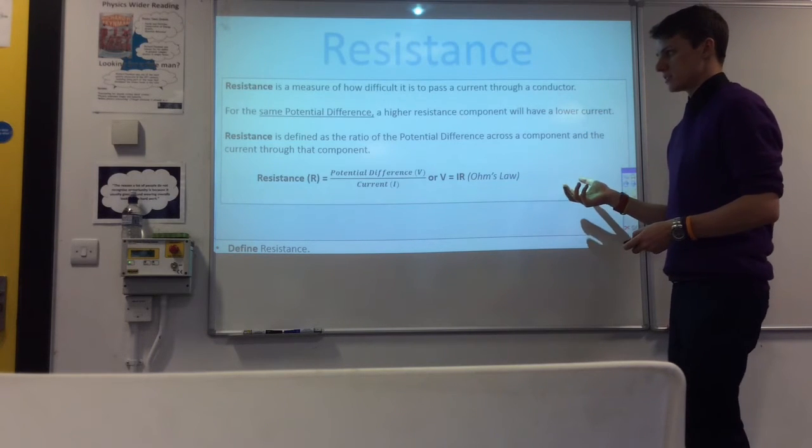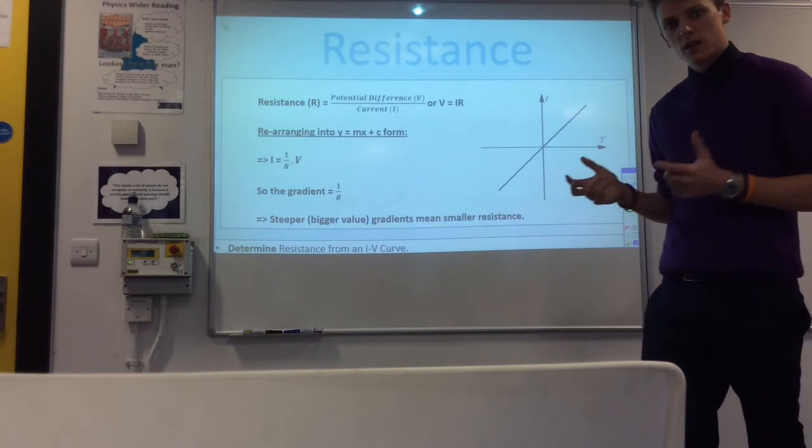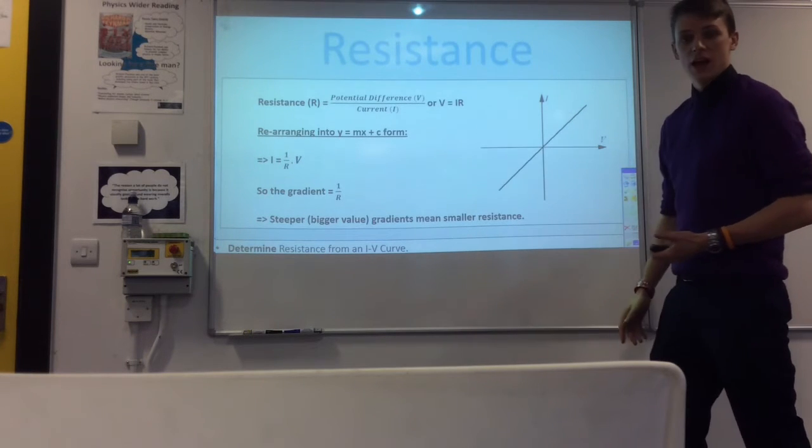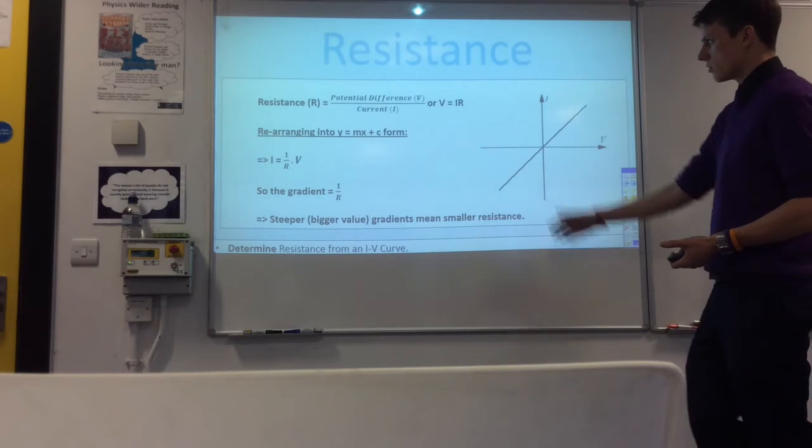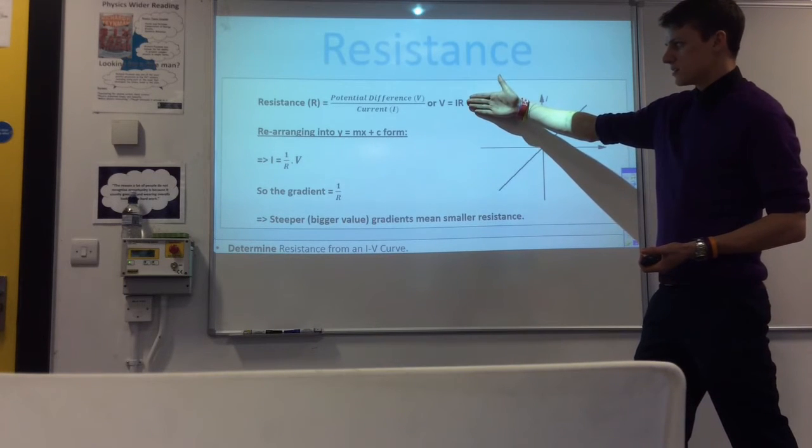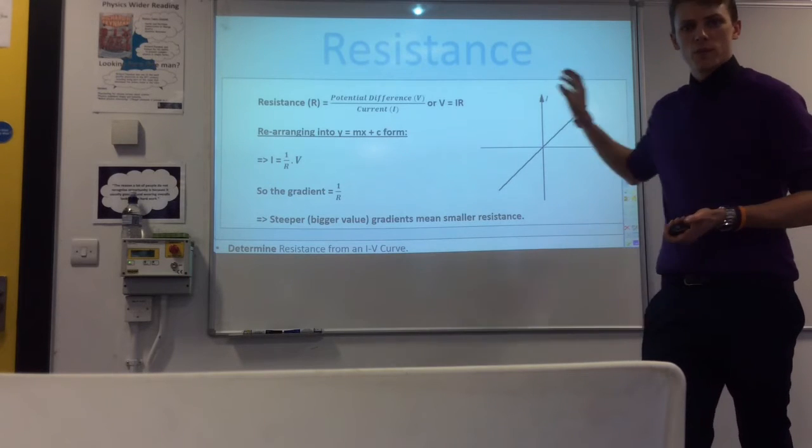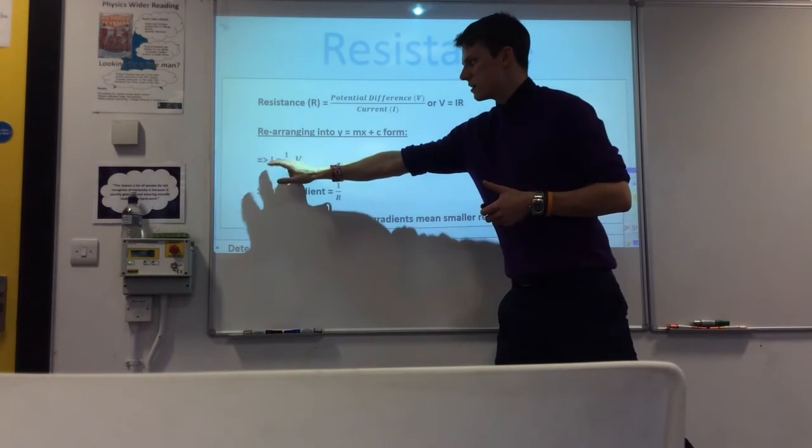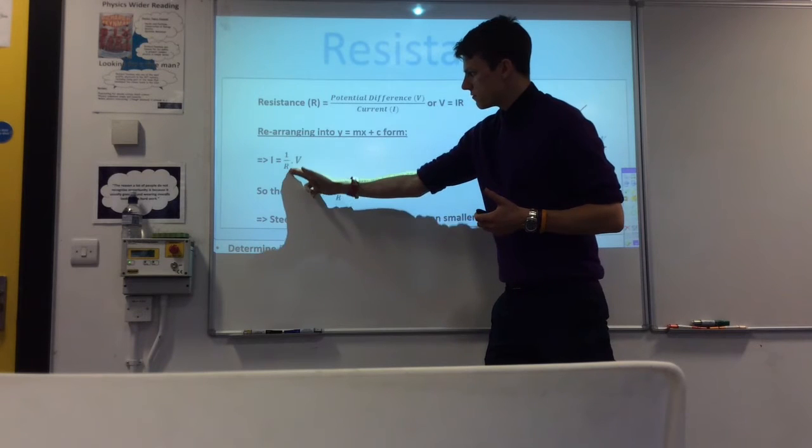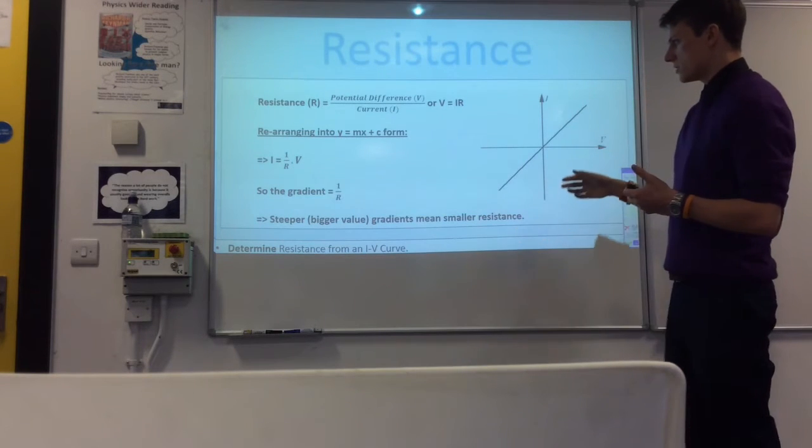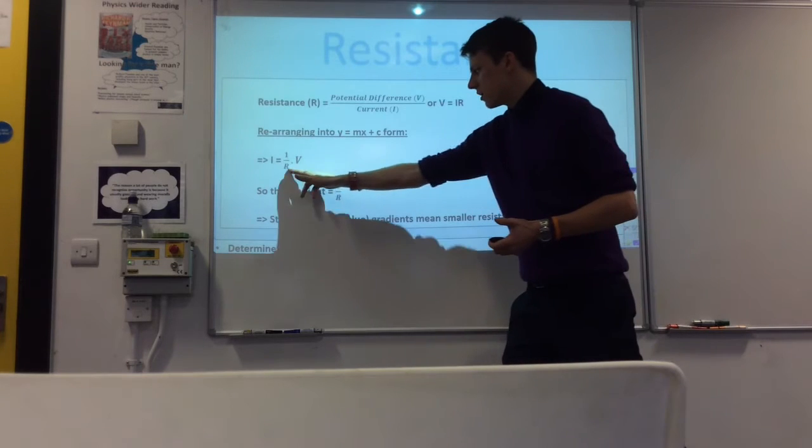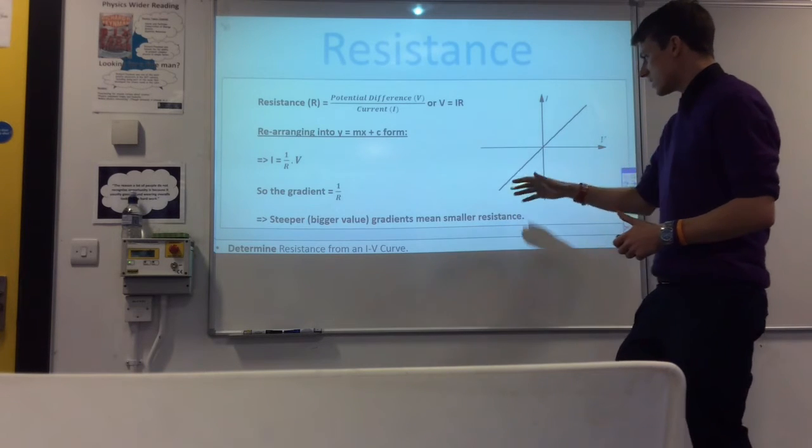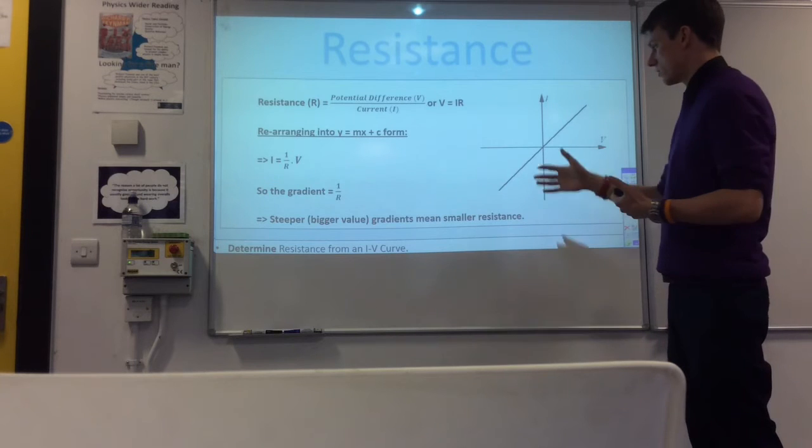So that's generally speaking what resistance is. Now we're going to be interested in determining resistance from an IV characteristic. What that means is you've got a graph with I on the y-axis and V on the x-axis. It's called an IV characteristic. So taking this equation we had before, V equals IR, we want it in Y equals MX plus C form. When we have a graph and an equation we want them to be mapping the same thing. So if we rearrange it slightly to leave I by itself, we get I is equal to 1 over R times V. So we know the gradient of this graph, the M, is going to be 1 over R. So the gradient here is 1 over R.